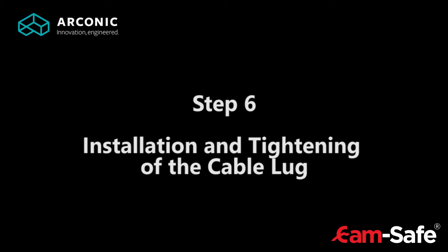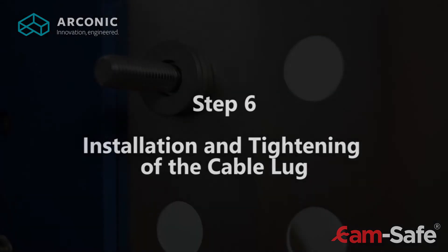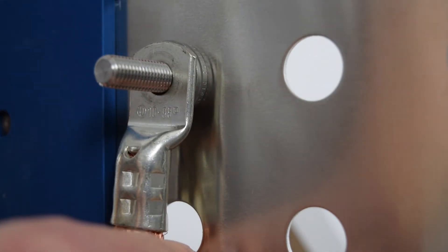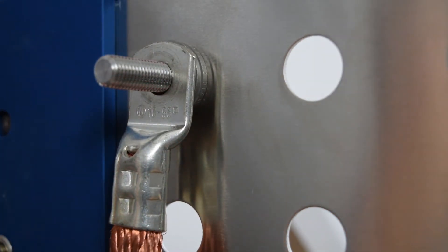Step 6: Installation and tightening of the cable lock. Attach the cable lock, the washer, the lock washer, and then screw on the nut.